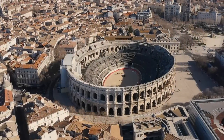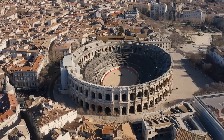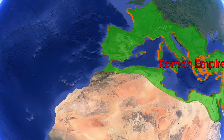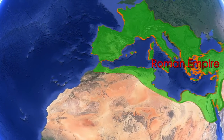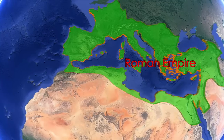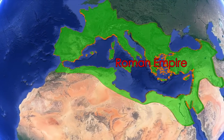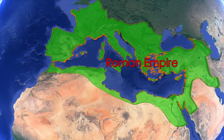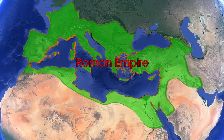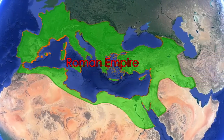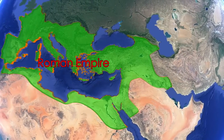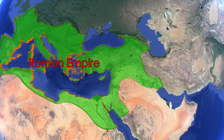For centuries, the city of Rome was the dominant power in Europe. Thanks to their conquests lasting from the 3rd century BC to the 2nd century AD, the proud Romans controlled an empire stretching from modern-day Scotland to the Sahara Desert and from the Pillars of Hercules to Mesopotamia.